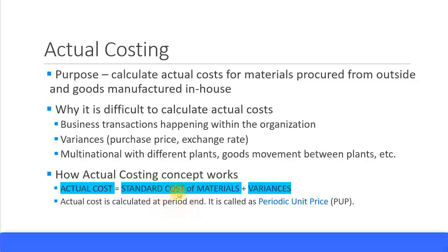This actual cost is calculated at period end, or month end. We will use the terminology 'period end' rather than 'month end.' In SAP terms, this calculated actual cost is called the Periodic Unit Price. The average periodic unit price is updated every month and that becomes the periodic unit price for the material, which represents its actual cost. We will look at the periodic unit price in more detail in the next slide.